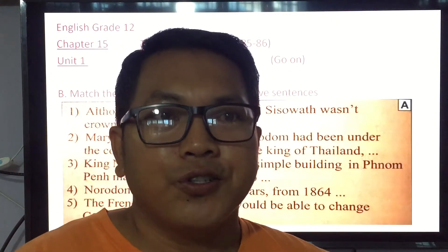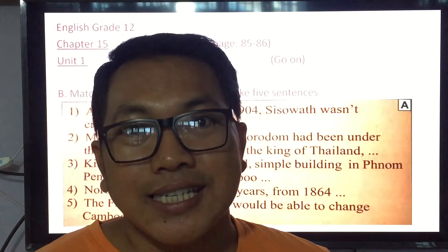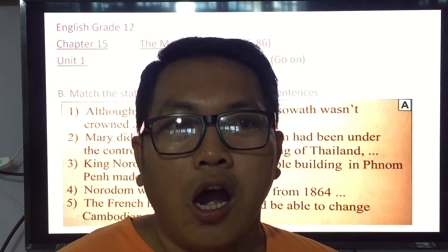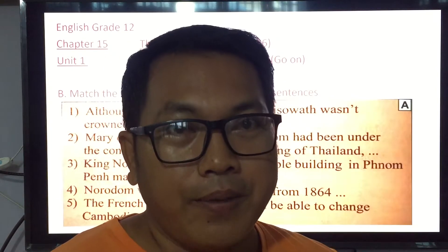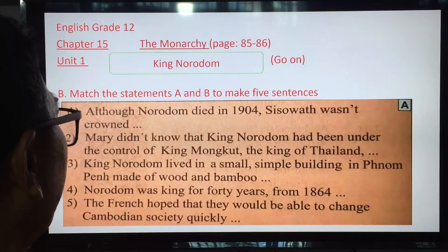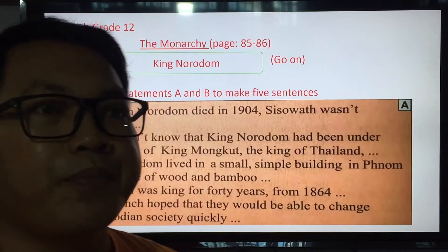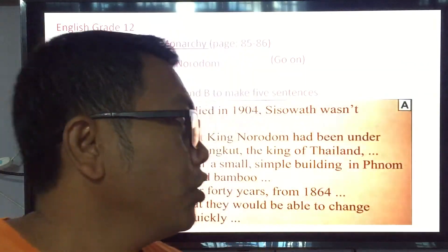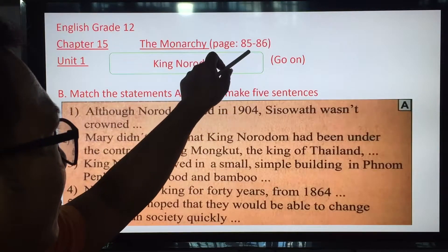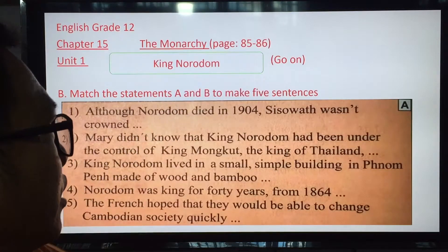Just so you know, King Norodom is a son of Ang Duong, right? So we finished Part A already. Now go to Part B on pages 85 and 86.